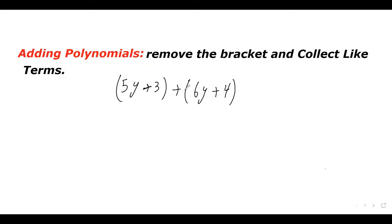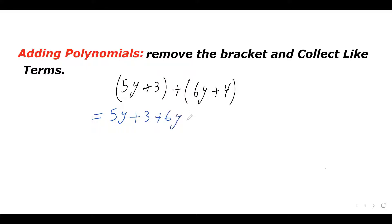5y plus 3 plus bracket 6y plus 4. We are adding two polynomials. So what we need to do is we just drop the bracket. So let's do that. This equals to 5y plus 3 plus 6y plus 4. We just drop the bracket — we remove the bracket.